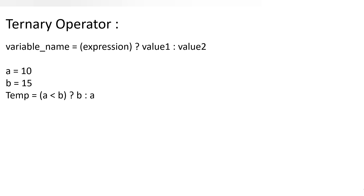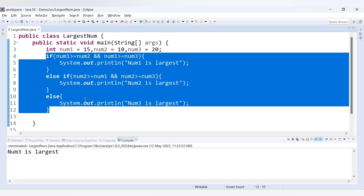The ternary operator syntax is: variable = expression ? value1 : value2. After the expression you put a question mark, and the two possible values are separated by a colon. If the expression is true, value1 is assigned to the variable; if false, value2 is assigned. For example, with int a = 10 and int b = 15: temp = (a < b) ? b : a — if the expression is true, b is assigned to temp; if false, a is assigned.